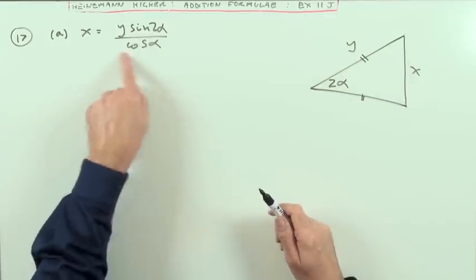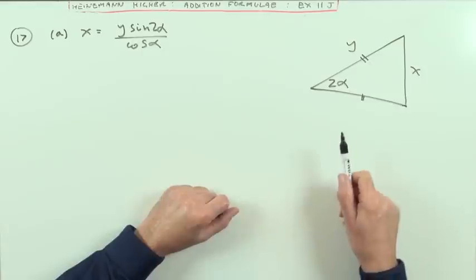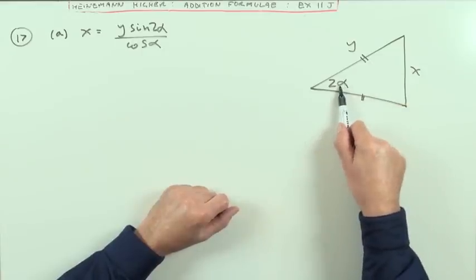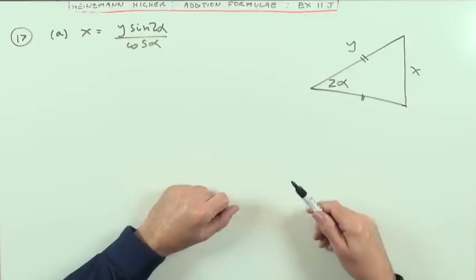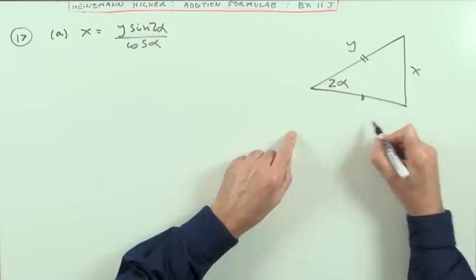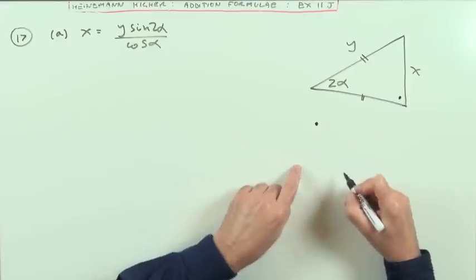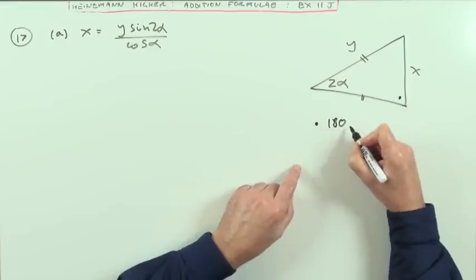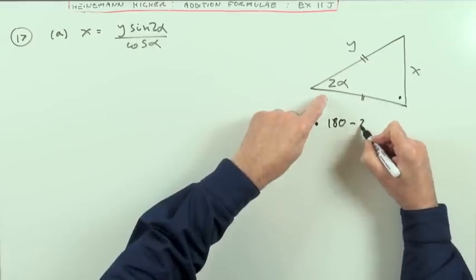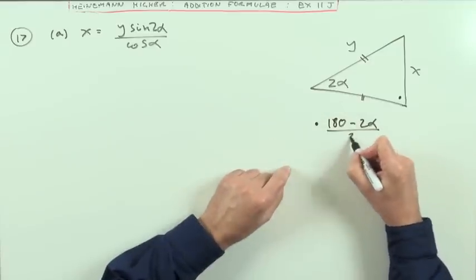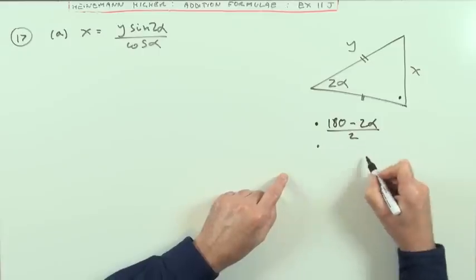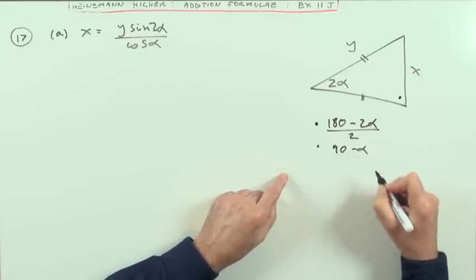Right, so that's the case. Well, that looks like the use of the sine rule, because I've got X is opposite the 2α. I need to know what's the Y opposite. Well, if it's an isosceles triangle, then I'm going to have the angle down here. It's going to be 180 minus the angle you've got, and then halved. So that angle is going to be 90 minus α.